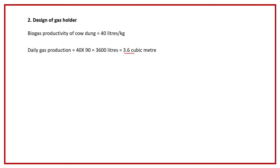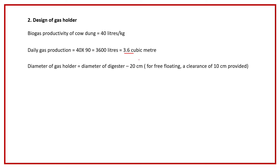Another design criterion is that we don't need to store the entire 3.6 cubic meters. The gas produced at night is used in the morning for cooking breakfast and lunch, and the gas produced during the day is used for cooking dinner. So only 50 percent needs to be stored at any time. The diameter of the gas holder must be less than the diameter of the digester.